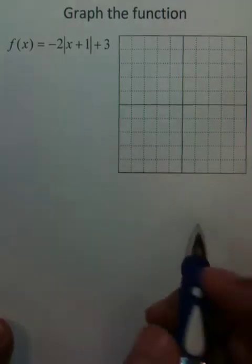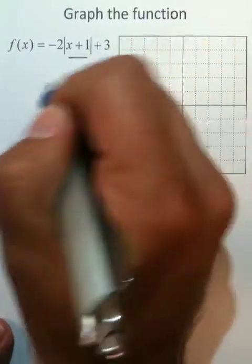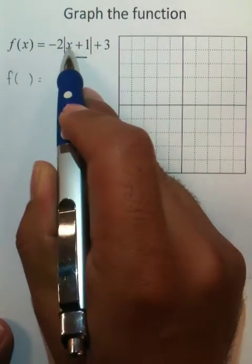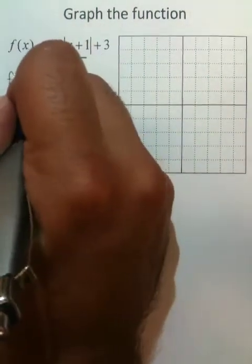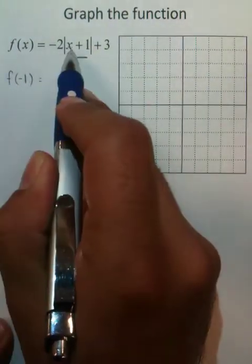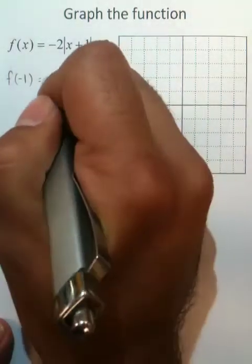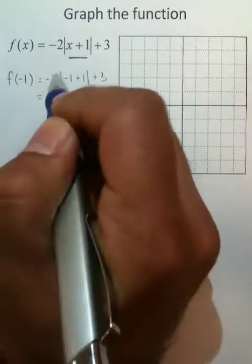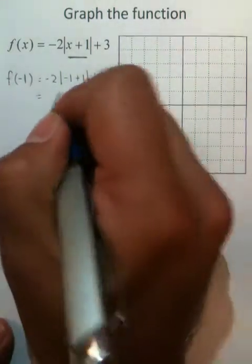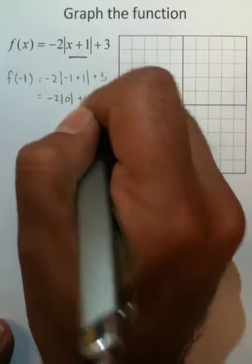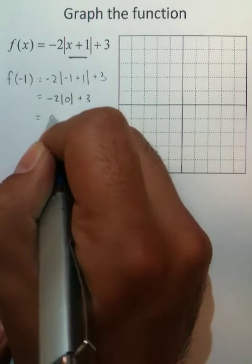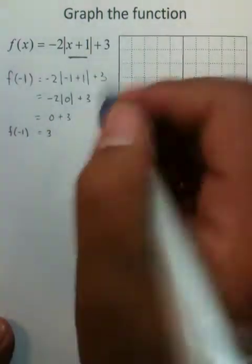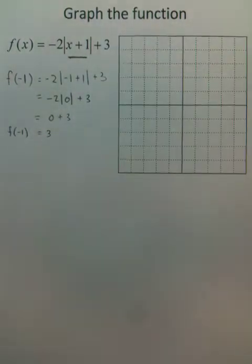Graphing absolute value functions is actually very simple. The key idea is you need to use an x-value that is going to make this quantity 0 — so negative 1. This is where you're starting; this is what's going to give you your vertex. Plugging negative 1 into your equation: negative 1 plus 1 is 0, absolute value of 0 is 0, times negative 2 you get 0.